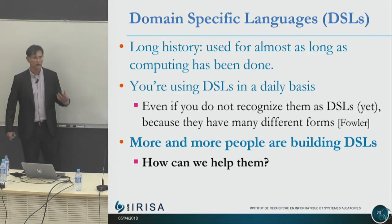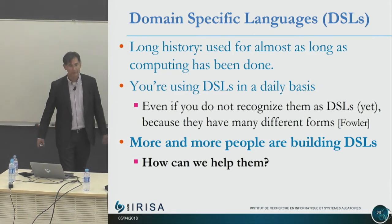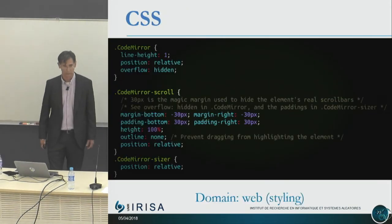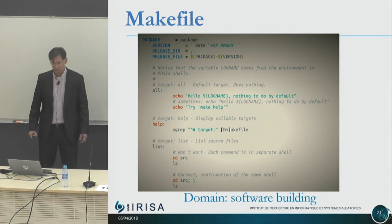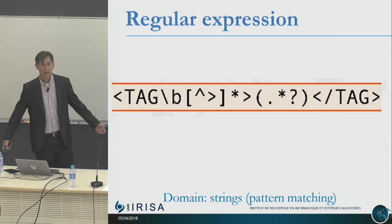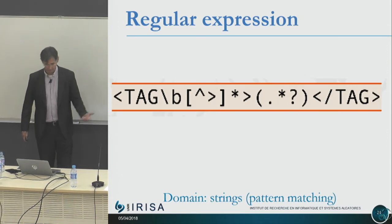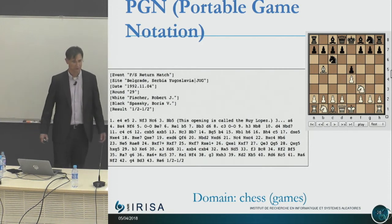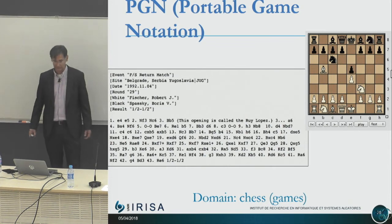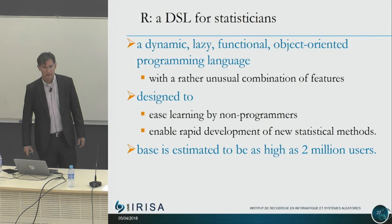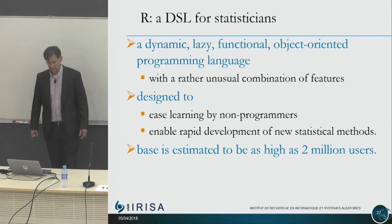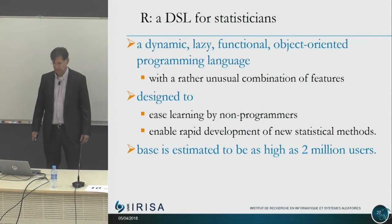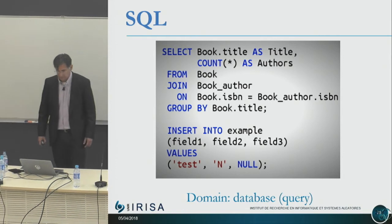Examples of DSLs: HTML for web markup, CSS for styling, makefiles for building software, regular expressions for pattern matching over strings, graph visualization, notation for chess, R for people doing statistics — with more than 2 million users, so a DSL is not necessarily a niche language — and SQL for database queries.